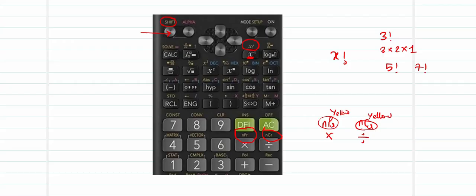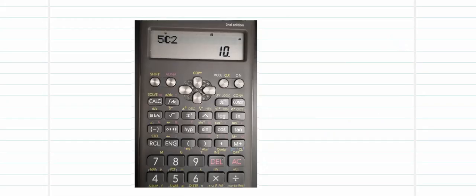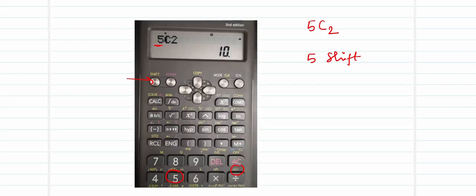First, let's compute NCR. Suppose I need the value for 5C2. Press 5 first — the 5 will appear on the display. Next, I need the letter C for NCR, which is on top of the division sign. So first press the Shift button to activate all the yellow-coded functions. After pressing Shift, press the division sign to activate NCR.